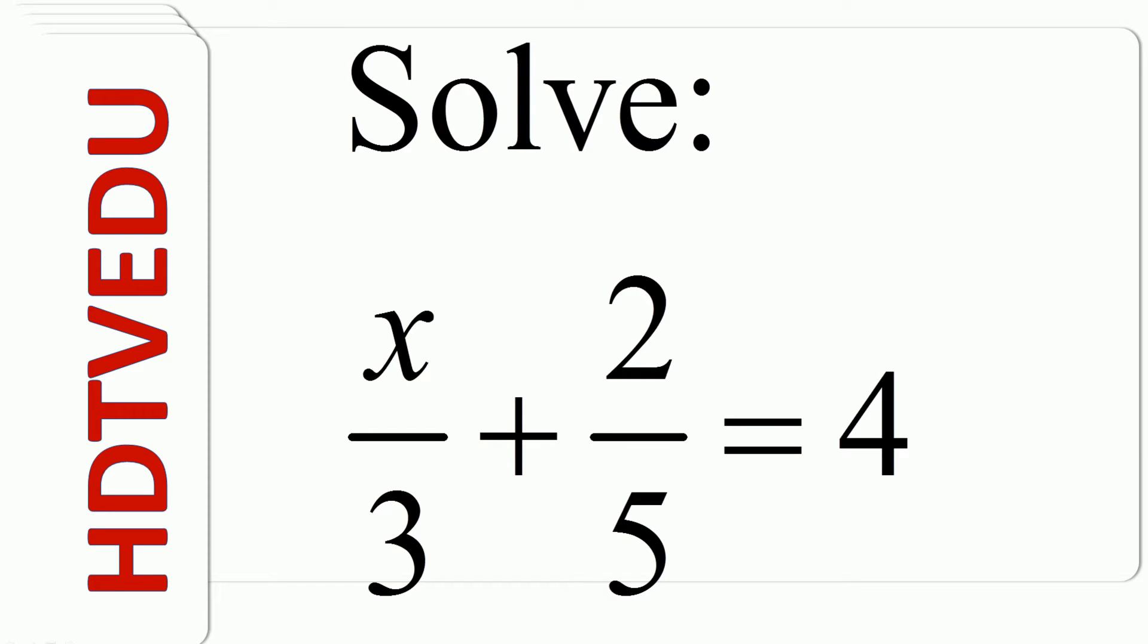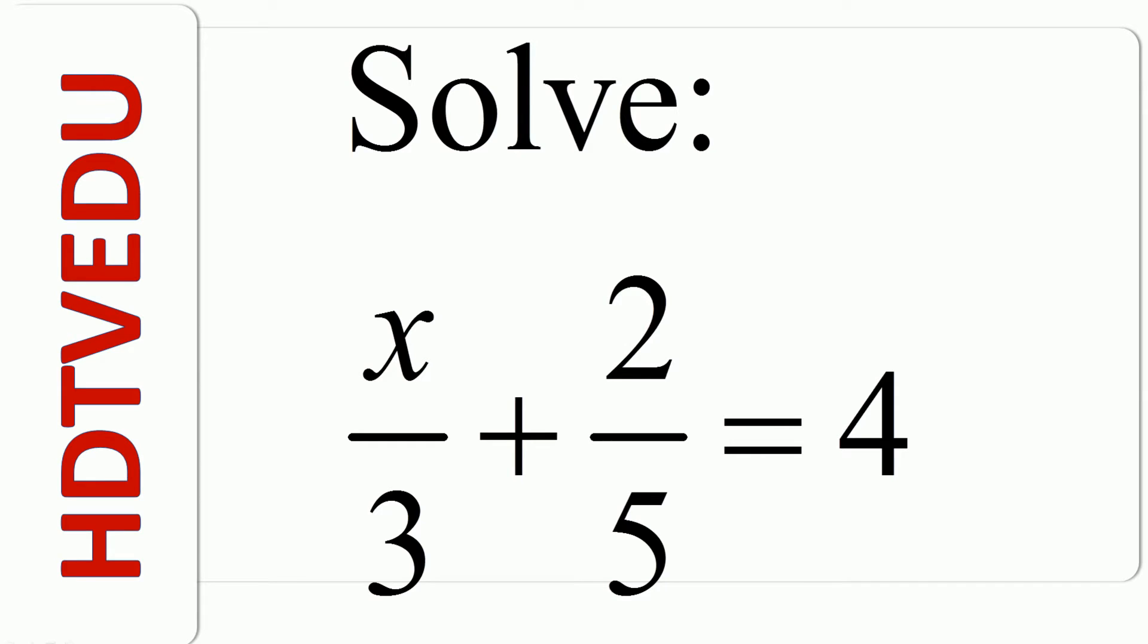Solve x over 3 plus 2 over 5 is equal to 4. Welcome! x over 3 plus 2 over 5 is equal to 4.